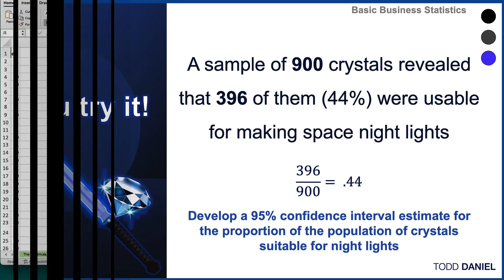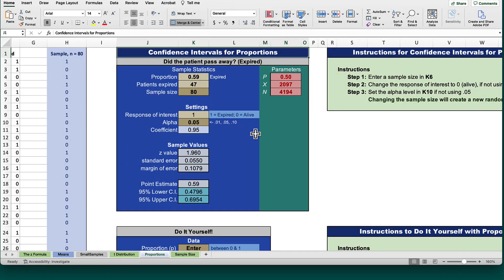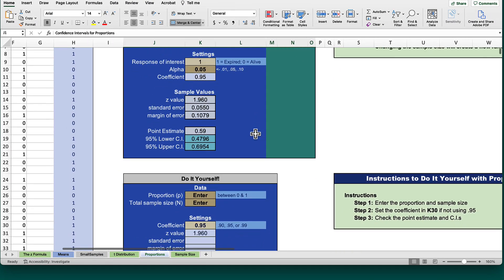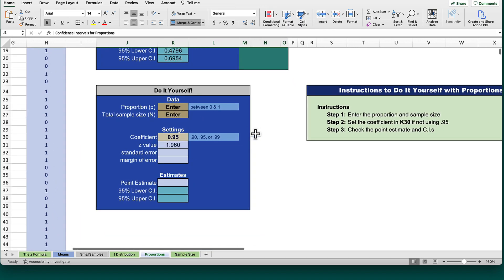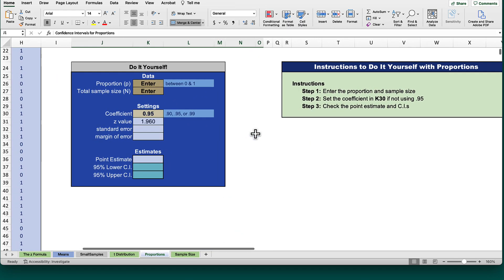This time we are still in the Proportions tab. Scroll down to the box that says do it yourself. We will begin by entering the proportion. It's 0.44. Remember that this has to be a number between 0 and 1. Now enter the total sample size of 900. And note that by default our coefficient is set to 95%, however it can be easily adjusted to 90 or 99.